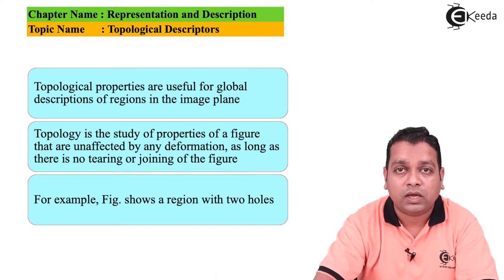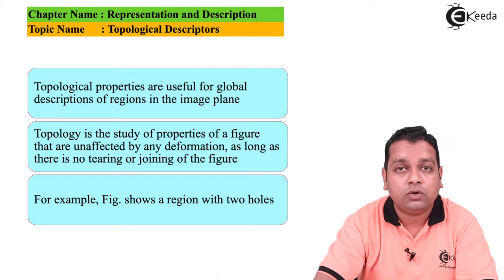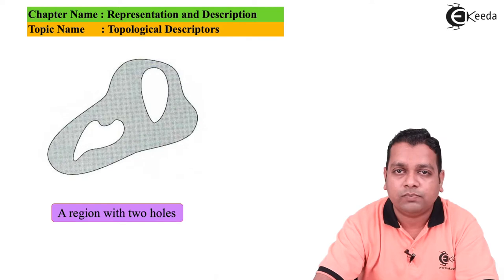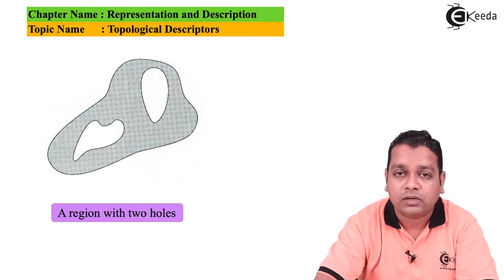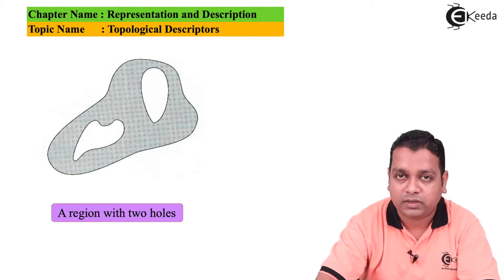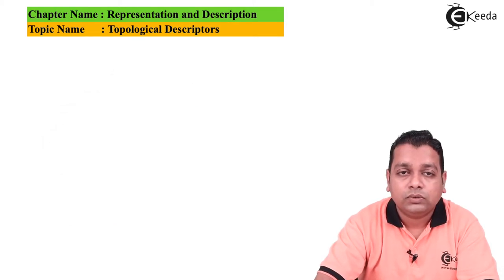For example, we can visualize a figure that shows a region with two holes — figure A. An arbitrary region has been shown, completely shaded, with the two holes visible as white areas.